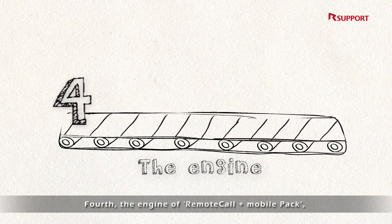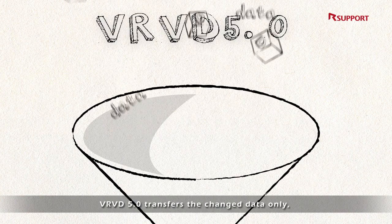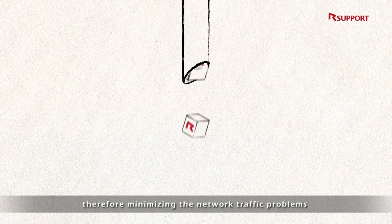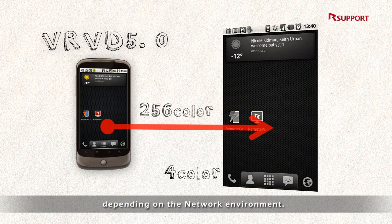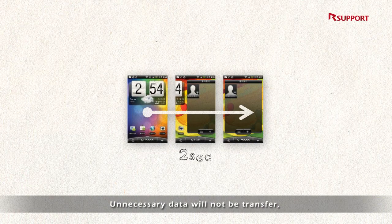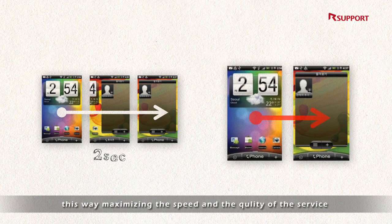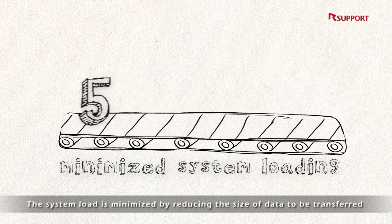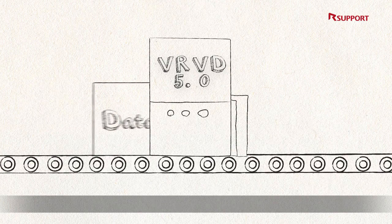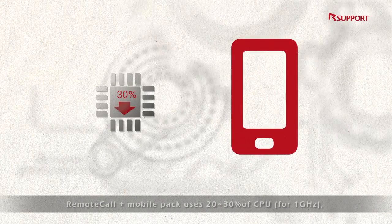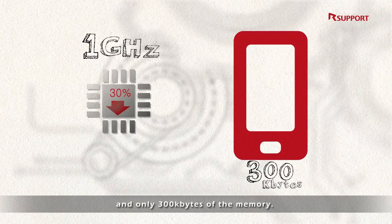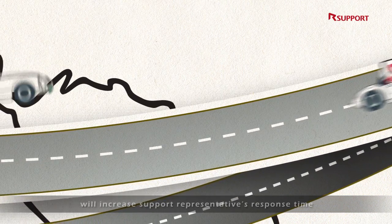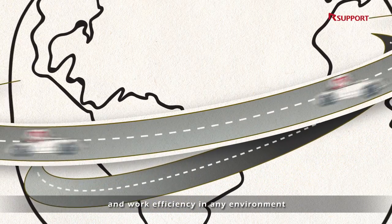Fourth, the engine of Remote Call Mobile Pack, VRVD 5.0, transfers the change data only, therefore minimizing network traffic problems. VRVD 5.0 also compresses the screen data depending on the network environment – unnecessary data will not be transferred – maximizing the speed and quality of the service. The system load is minimized by reducing the size of data to be transferred and electricity usage. Remote Call Mobile Pack uses 20-30% of the CPU for 1 GHz and only 300 KB of memory, therefore minimizing network traffic. This means Remote Call Mobile Pack will increase support representatives' response time and work efficiency in any environment.